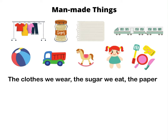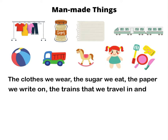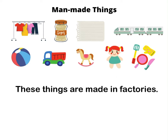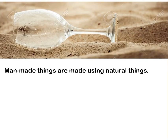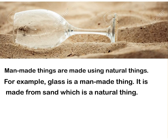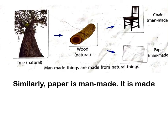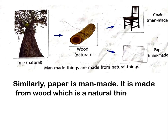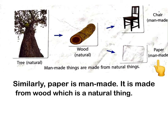Man-made things: many of the things we use are man-made things. The clothes we wear, the sugar we eat, the paper we write on, the trains we travel in, and the toys we play with are man-made things. These things are made in factories. Man-made things are made using natural things. For example, glass is a man-made thing — it is made from sand, which is a natural thing. Similarly, paper is man-made — it is made from wood, which is a natural thing.